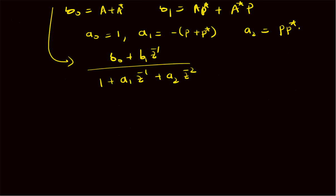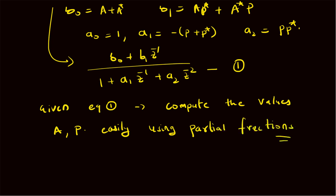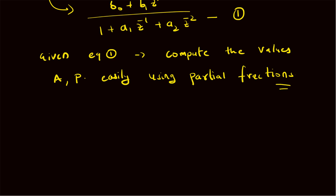An advantage is that given this ratio — call it Expression 1 — we can easily compute the partial fraction coefficient values A and the pole value P using the partial fraction approach. Therefore, when X(z) has both real poles and complex conjugate poles, and M is greater than or equal to N, we can write the general structure for X(z) as follows.